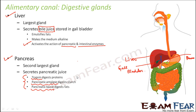You might ask: if carbohydrates are already digested in the mouth by salivary amylase, why is pancreatic amylase needed? The answer is that digestion of carbohydrates begins in the mouth but is not completed there — some portion remains undigested. That undigested portion is acted upon again by pancreatic amylase. In this way, any leftover undigested carbohydrates, proteins, or fats are all acted upon by the pancreatic enzymes.